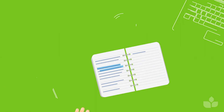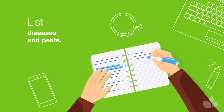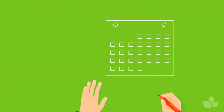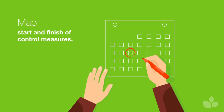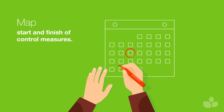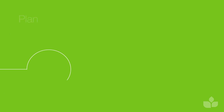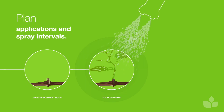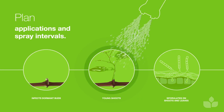Start developing your program by listing the diseases and pests that can affect your vineyard or block. Once you have identified your targets, map the ideal start and finish of control measures for each disease and pest. The number of applications and spray intervals required can then be aligned with critical growth stages and potential restrictions.